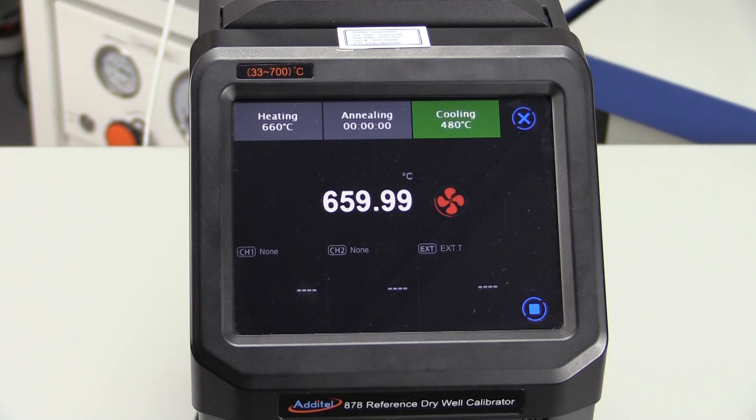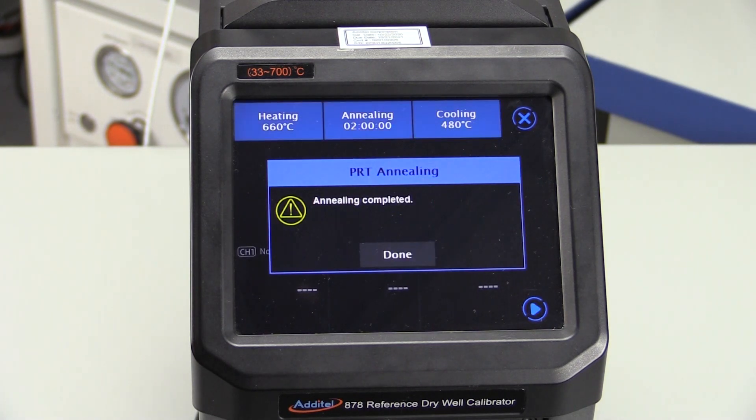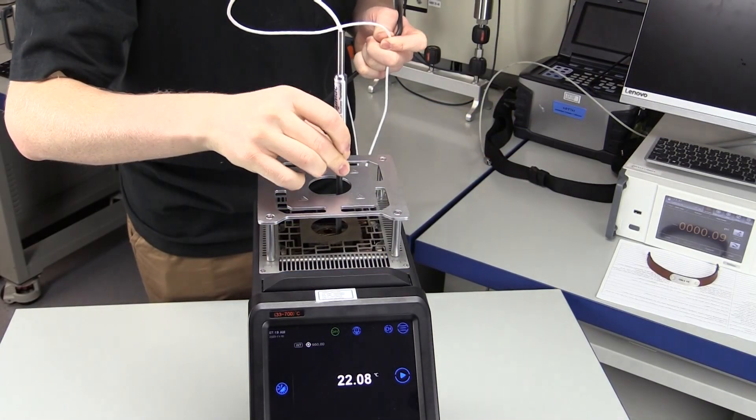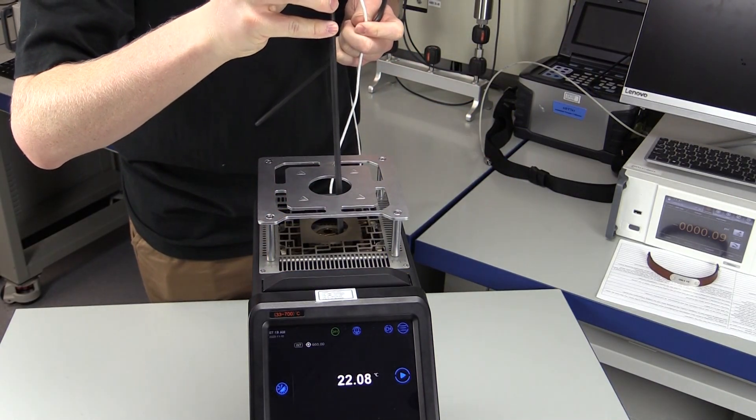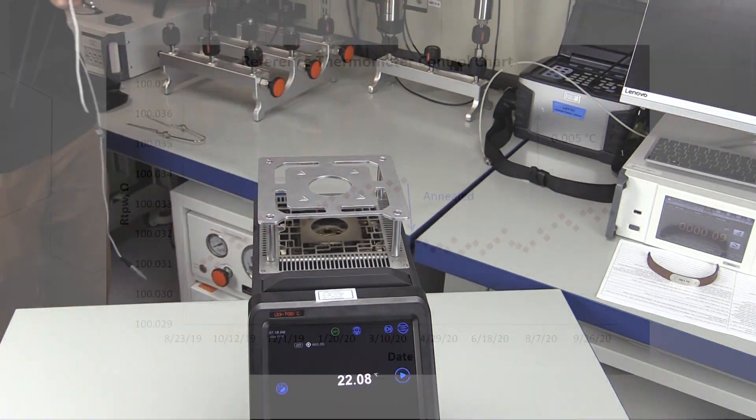Once the automated annealing process completes, the 878-700 will display a completion message. When the probes have cooled and it's safe to remove them, remember to handle them with great care as mechanical shock is a major contributor to changes in the sensing element.